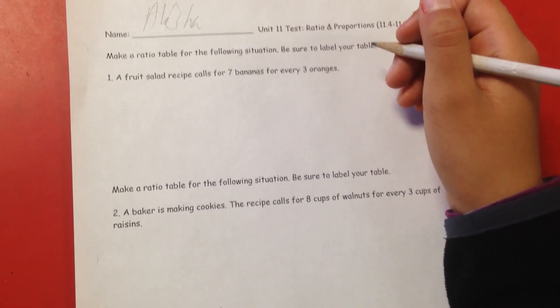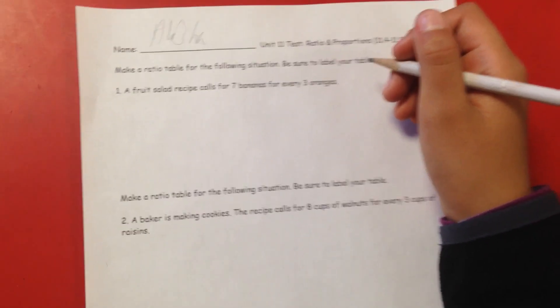All right, in this problem number one, a fruit salad recipe calls for seven bananas for every three oranges.